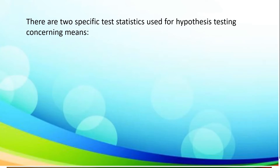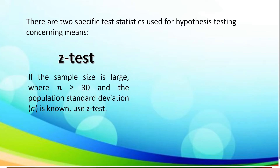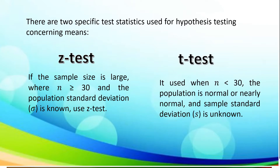Now let us describe these two specific test statistics used for hypothesis testing. The first one is Z-test: if the sample size is large, where n is greater than or equal to 30, and the population standard deviation is known, we use Z-test. For T-test, it is used when the given sample is less than 30, the population is normal or nearly normal, and the sample standard deviation is unknown.